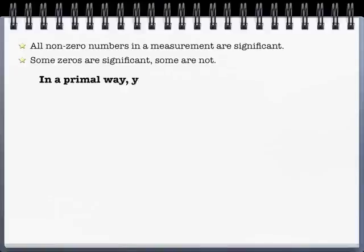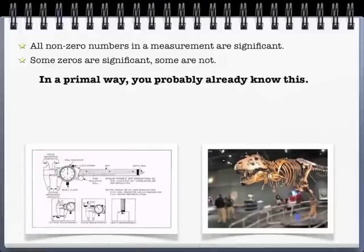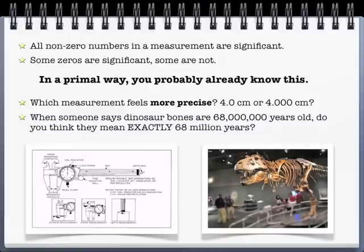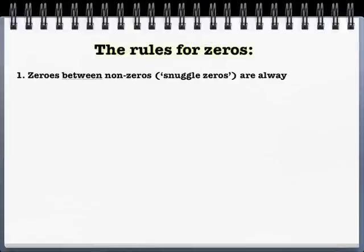That might sound confusing, but really sort of in a primal way, you already understand this concept. I'll give you two examples. If you see two numbers 4.0 centimeters or 4.000 centimeters, I think you understand intrinsically that second number has a higher quality of measurement. It must have been measured against a better piece of equipment. And when someone says a dinosaur bone is 68 million years old, it's unlikely that you think, wow, how did they get that so exact? Next year it will be 68 million and one years old. What a coincidence it's right on 68 million. You understand that certain zeros weren't measured. Some were and some weren't.